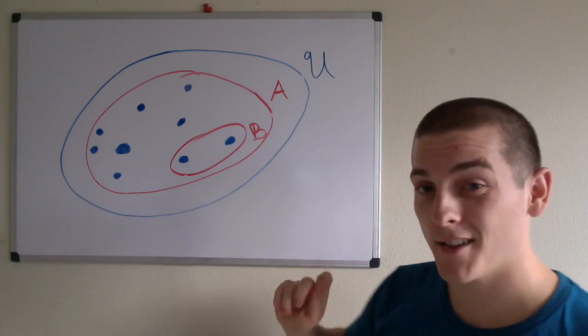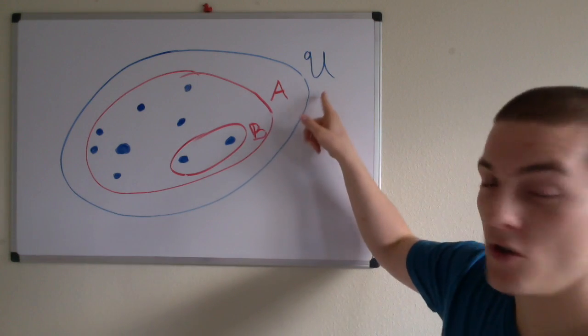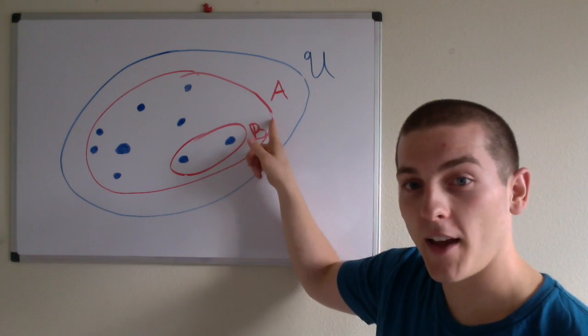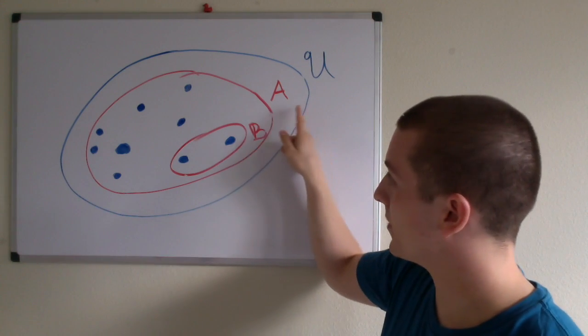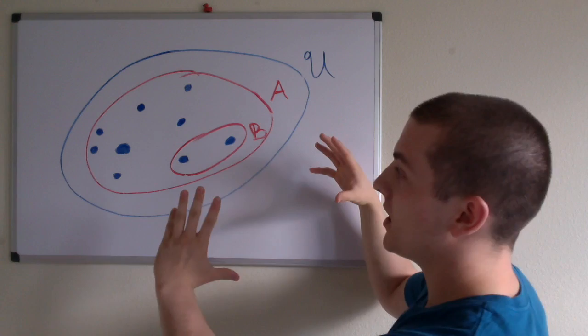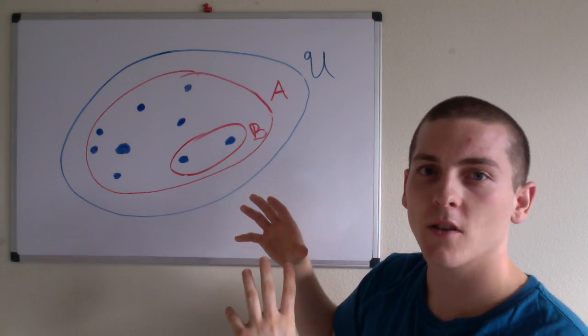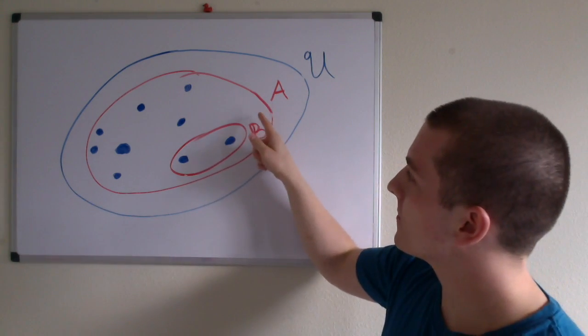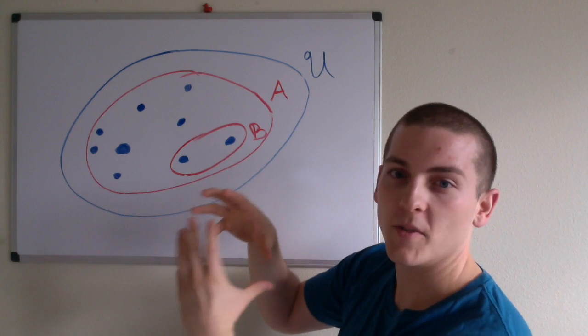What we cannot say is that U is a proper subset of A. Although the circle here is bigger than A, like it just takes up more space, it doesn't contain any more elements.